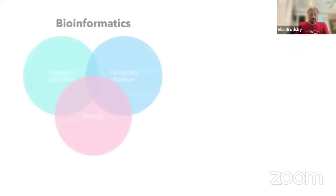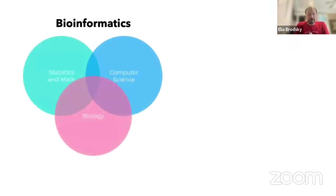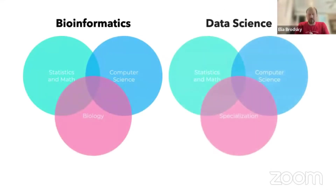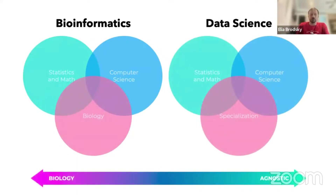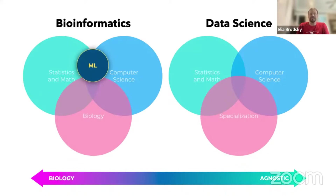As you can see, bioinformatics and data science are very similar. The difference between them is that bioinformatics is very focused on biological problems, and data science is focused on general application of these tools.